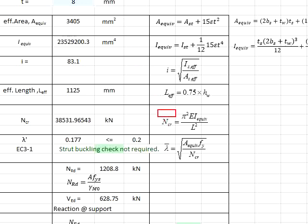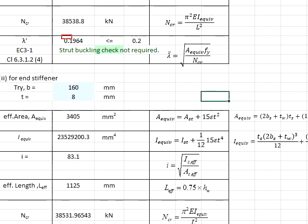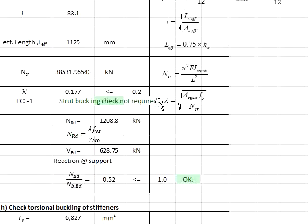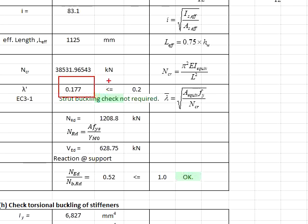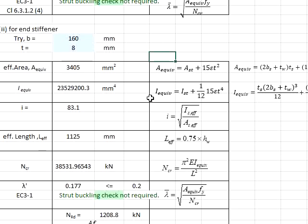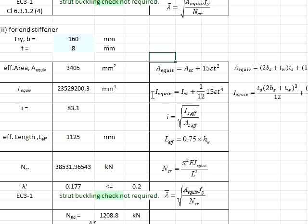You may check against the Ncr. And you found that the slenderness ratio again is less than 0.2. That means both the intermediate stiffener and also the end stiffener are having the slenderness ratio less than 0.2. That means the axial resistance is not reduced due to the buckling.